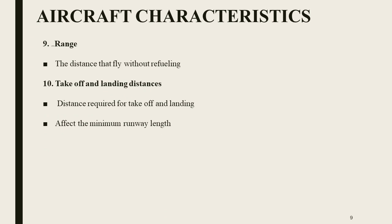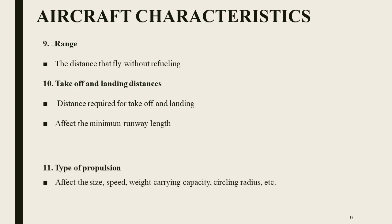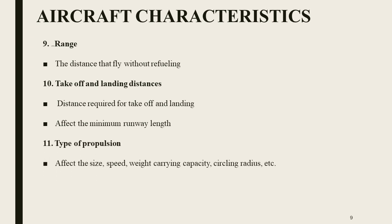Next, takeoff and landing distance — the distance required for takeoff and landing, and it affects the minimum runway length. Type of propulsion — the method of propulsion adopted affects the size, speed, weight-carrying capacity, circling radius, etc.